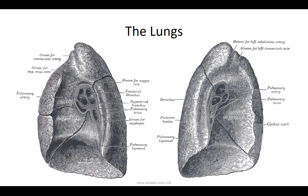The most prominent surface structure is the hilum, which surrounds the root of the lung along the mediastinal surface. This serves as an access point for structures entering and exiting the lungs. Identifying the specific structures can be a little tricky, especially if the root is transected close to the lung after the primary structures begin to branch.